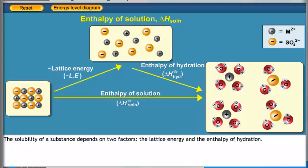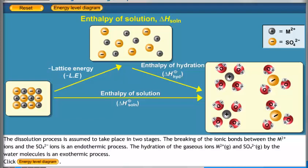The solubility of a substance depends on two factors: the lattice energy and the enthalpy of hydration. The dissolution process is assumed to take place in two stages. The breaking of the ionic bonds between the M2+ ions and the SO42- ions is an endothermic process. The hydration of the gaseous ions M2+ and SO42- by the water molecules is an exothermic process.